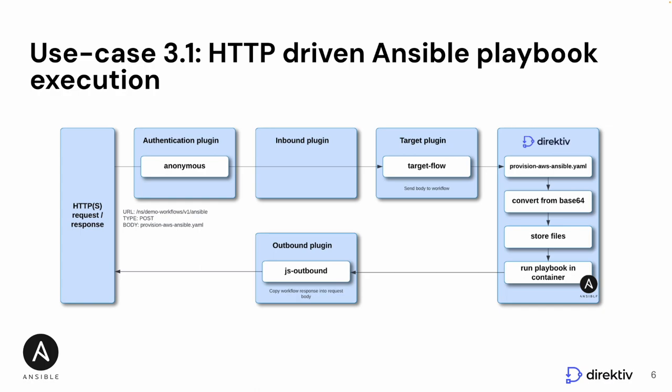The body of this request contains the Ansible Playbook we want to execute. In Directive, all we're going to do is unpack this body. It's going to be a Base64 encoded object. We're going to decode it from Base64 into the plain text YAML that the Ansible Playbook expects, and store that file as an internal variable in Directive because we want to reuse it.